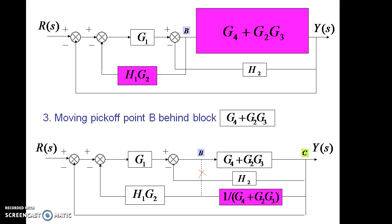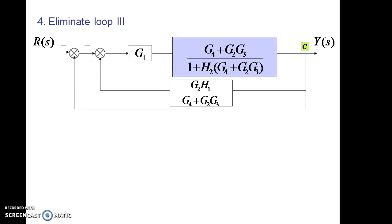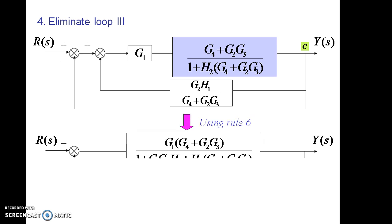Now we can remove the innermost feedback path which is shown with 2, the loop 2. So with the transfer function formula, we can have that as G4 plus G2 G3 by 1 plus H2 into G4 plus G2 G3, its corresponding transfer function which is the feedback path transfer function.